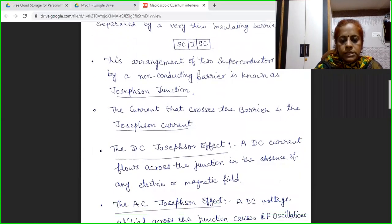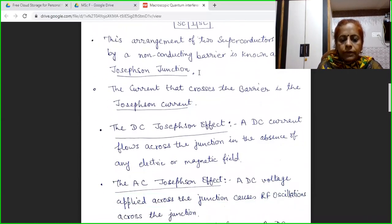Now, AC Josephson effect. What is AC Josephson effect? On this insulating layer, if we apply a DC voltage source, then in the output, we will get RF oscillations. That means in the output, the current is alternating current. By applying a DC voltage across the barrier, we get a current that is alternating in nature.